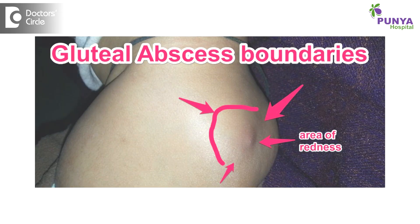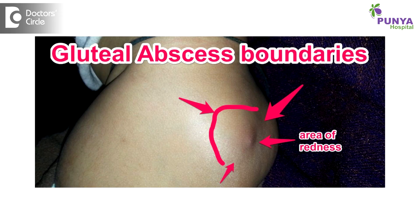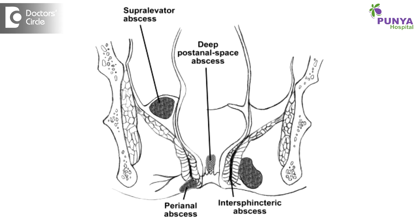There are two conditions called gluteal abscess and perianal abscess. Both are different conditions, infective in origin. Abscess means collection of pus in their respective location.